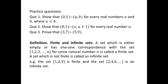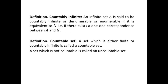For example, the set {1, 2, 3} is finite, and the set {2, 4, 6, ...} is an infinite set. Next is our main definition: countably infinite. An infinite set A is said to be countably infinite, or denumerable, or enumerable, if it is equivalent to N — that is, if there exists a one-to-one correspondence between A and N, where N is the set of natural numbers. A set which is either finite or countably infinite is called a countable set.